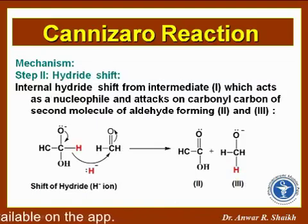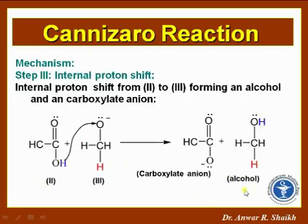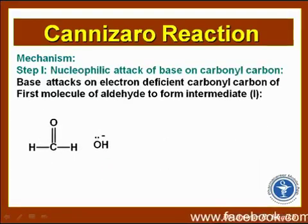Step 2 is the hydride shift. Intermediate 1 shifts a hydride, which acts as a nucleophile and attacks the carbonyl carbon of the second molecule of aldehyde, forming intermediates 2 and 3. The next step involves an internal proton shift to transfer a proton to intermediate 3, forming a carboxylate anion and an alcohol, which are the ultimate products of the Cannizzaro reaction.